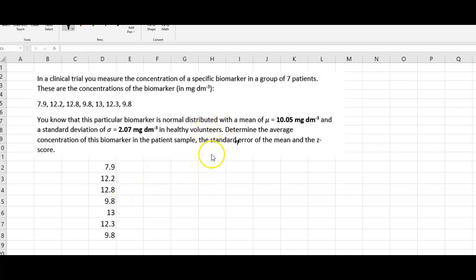So that would be the sample mean, and that's very easy to do. We just simply add up all the concentration readings and divide by the number of observations we have. In Excel, we can do that very easily with the average or mean function. We highlight the cells here and get a mean of 11.11 milligrams per decimeter to the minus three.